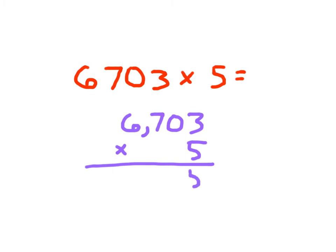5 times 3 is 15. Write 5. Regroup that 1 right to the tens place. 5 times 0, which is 0. Plus 1, which is 1. 5 times 7, which is 35.